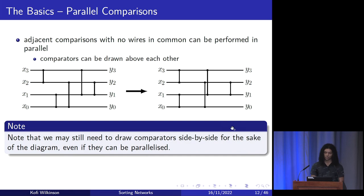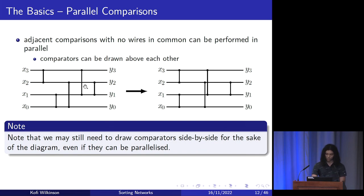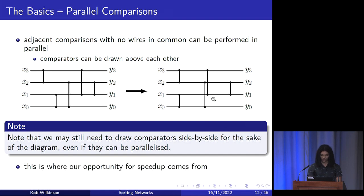You might have already noticed that adjacent comparisons in the network with no wires in common can be performed in parallel. Diagrammatically, we draw the comparators above each other. Note, however, that we may still need to draw comparators side by side for the sake of the diagram — some comparators can be performed in parallel but drawn closely next to each other for clarity. This parallelism is where our opportunity for speed up comes from.